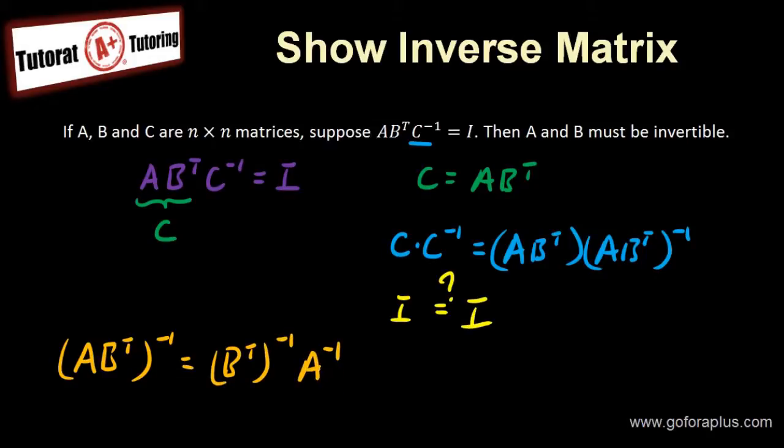So therefore, A^(-1) must exist. How about B? Well, same thing with B. You can switch the T and -1. So it becomes B^(-1) transpose and A^(-1).